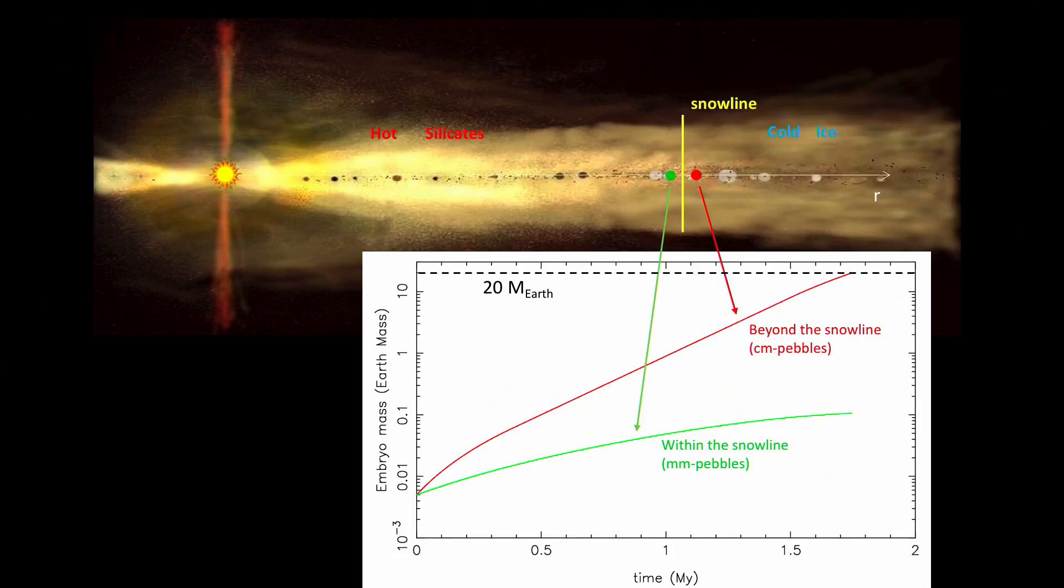And this explains this dichotomy in the solar system: big planetary cores in the outer part and small planetary embryos in the inner part. And I repeat, this is due essentially to the fact that pebbles, icy pebbles in the outer part of the disk, are at least an order of magnitude bigger than rocky pebbles in the inner part of the disk.